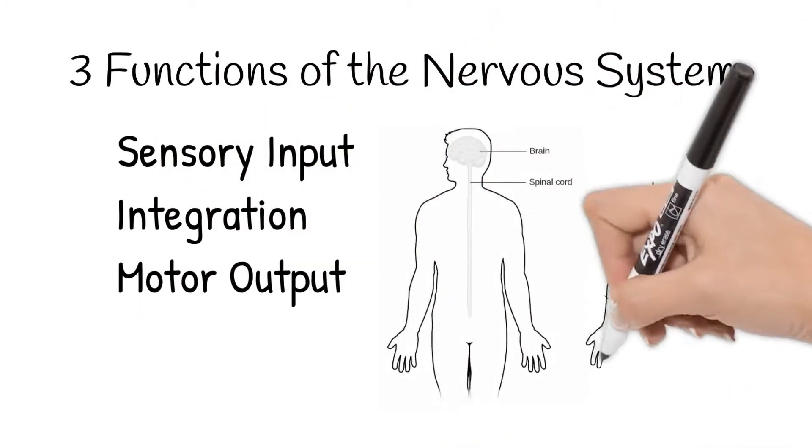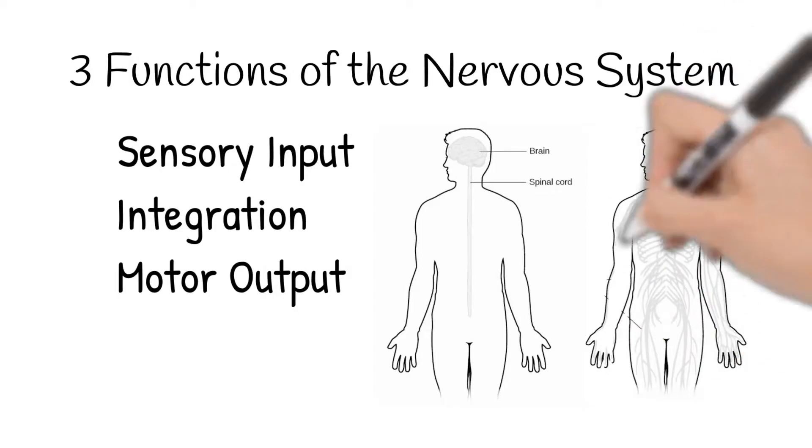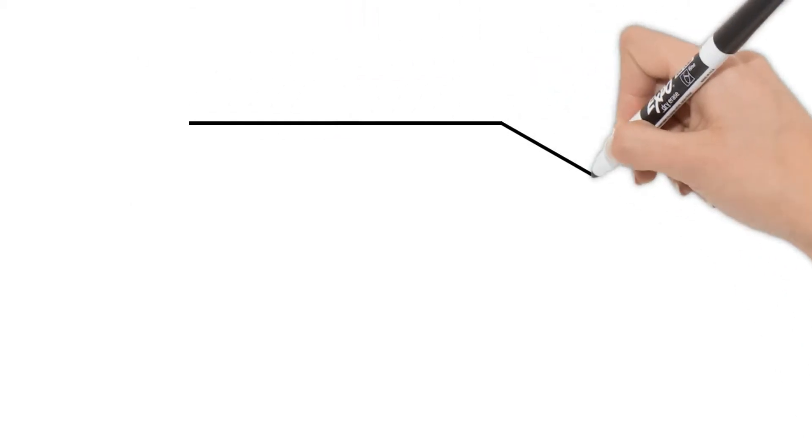While discussing those three functions, we started to see how the nervous system works. To better visualize though, here is a diagrammed path.